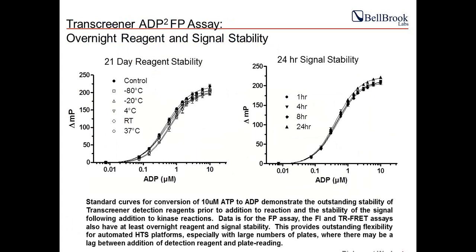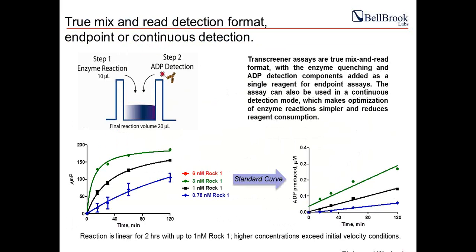Direct detection means the protocol is the simplest available: you run your enzyme reaction in step one, then add your detection mix — the Transcreener reagents with the stop mix — and read the plates. You can run this assay either in continuous mode or endpoint mode. For endpoint mode, you add your tracer and antibody in the stop buffer provided, which contains EDTA to chelate magnesium.